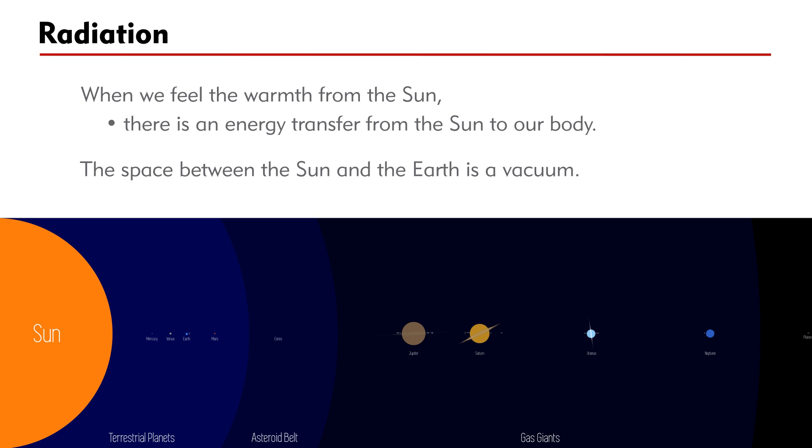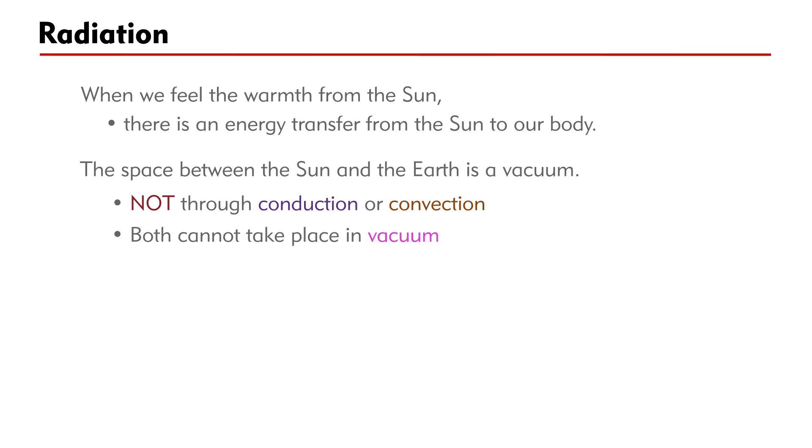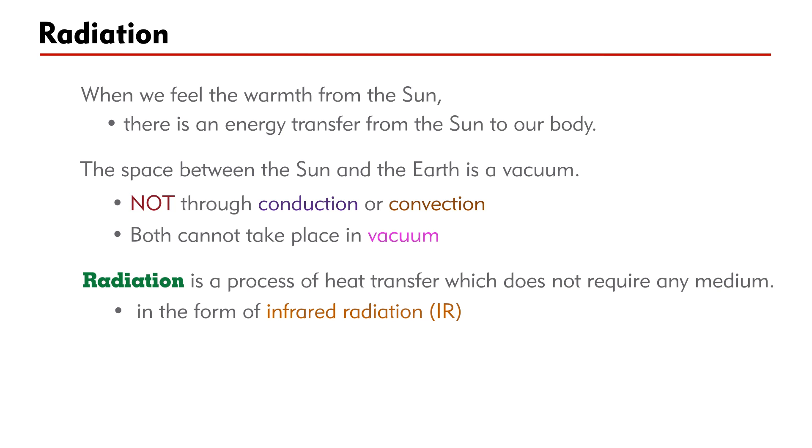However, the space between the sun and the earth is a vacuum. Therefore, this energy transfer must not be through conduction or convection, because both cannot take place in vacuum. Instead, radiation is used to describe the energy transfer process. Radiation is a process of heat transfer which does not require any medium. The energy is transferred in the form of infrared radiation.